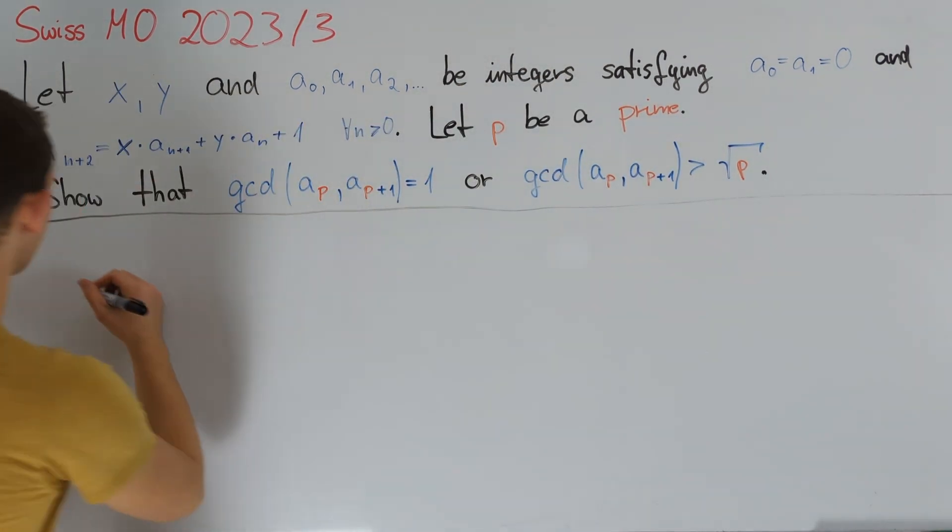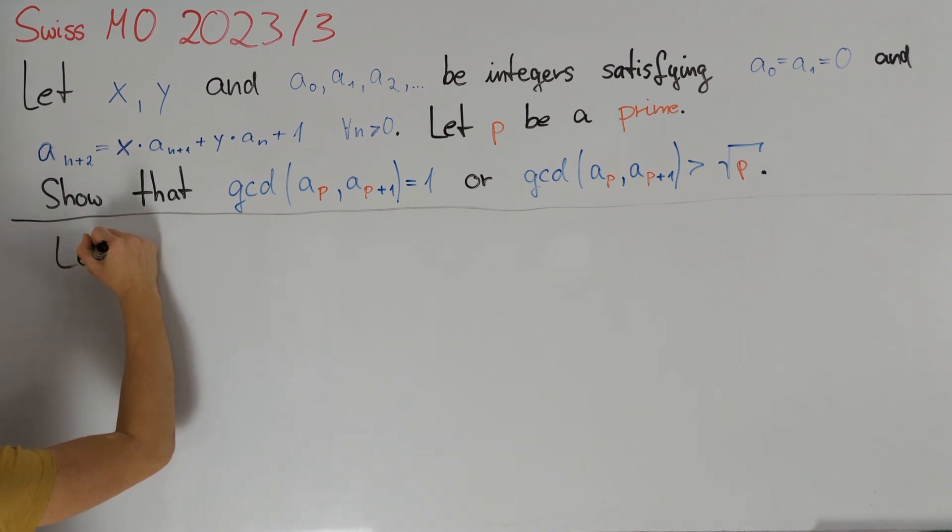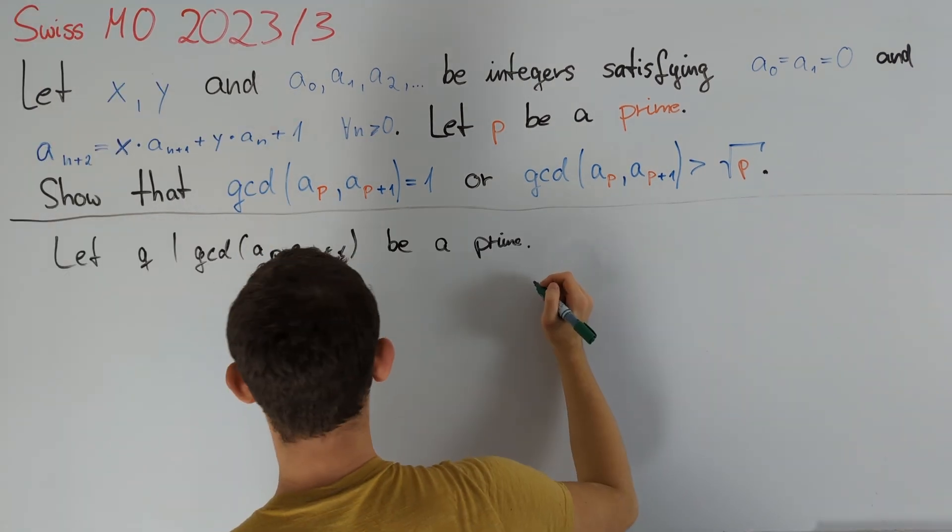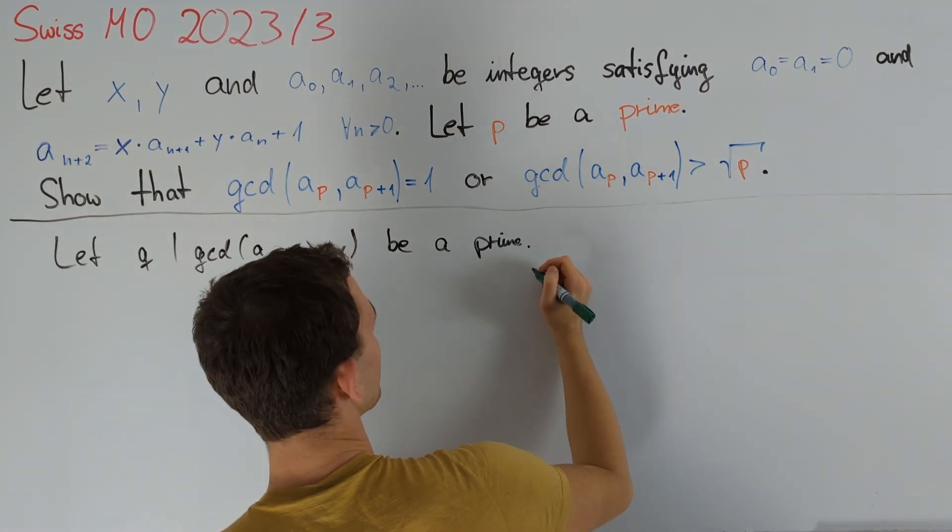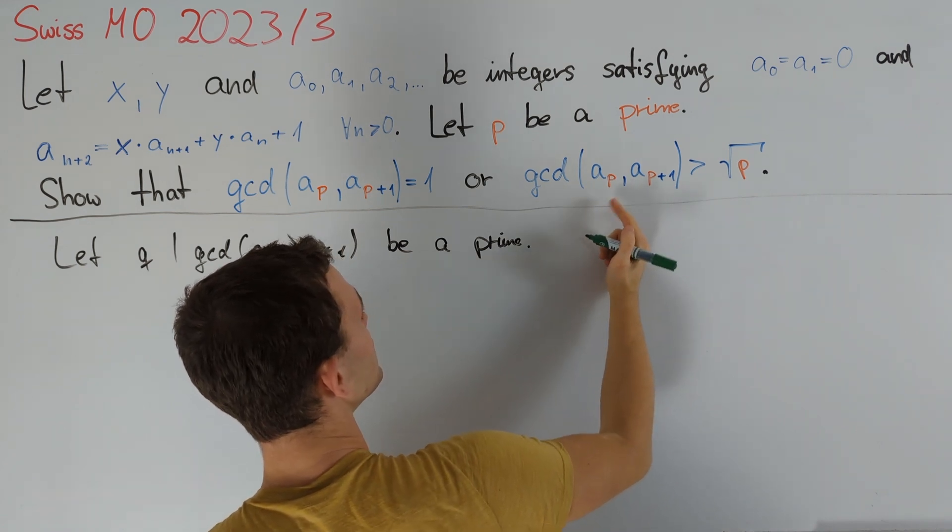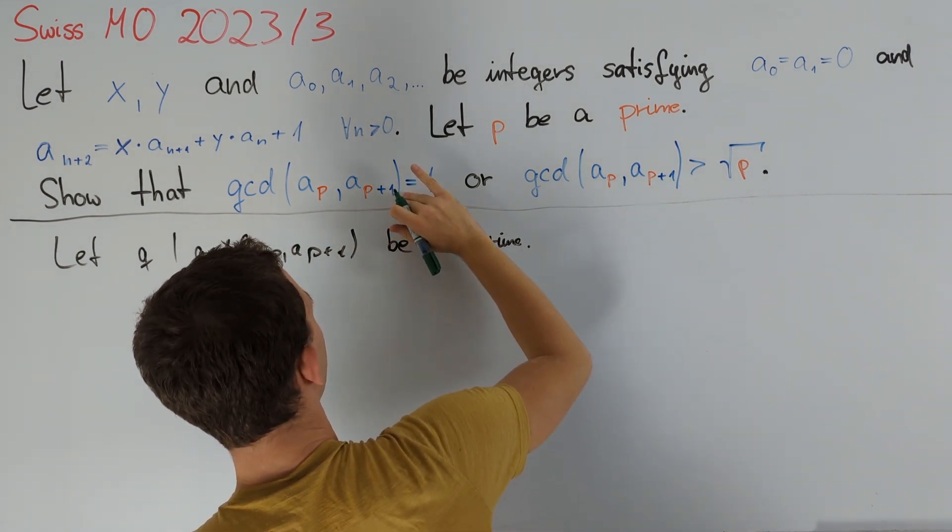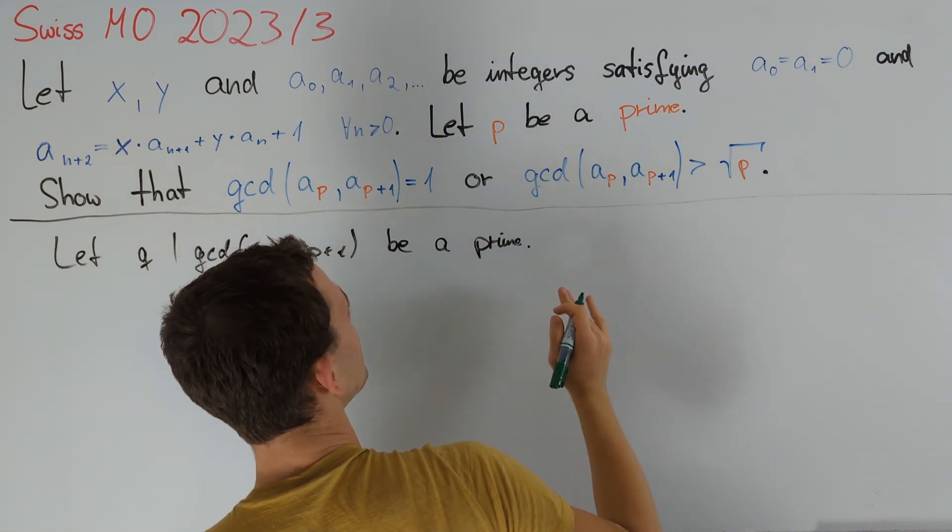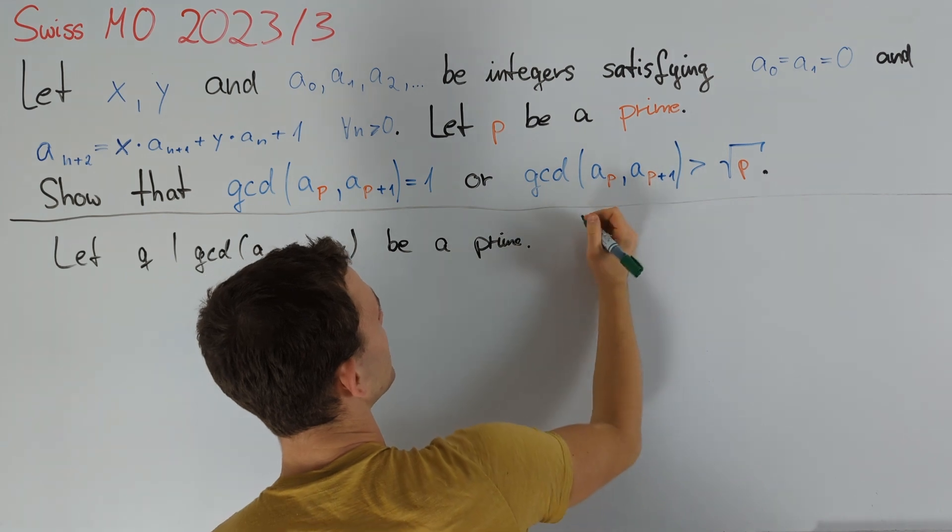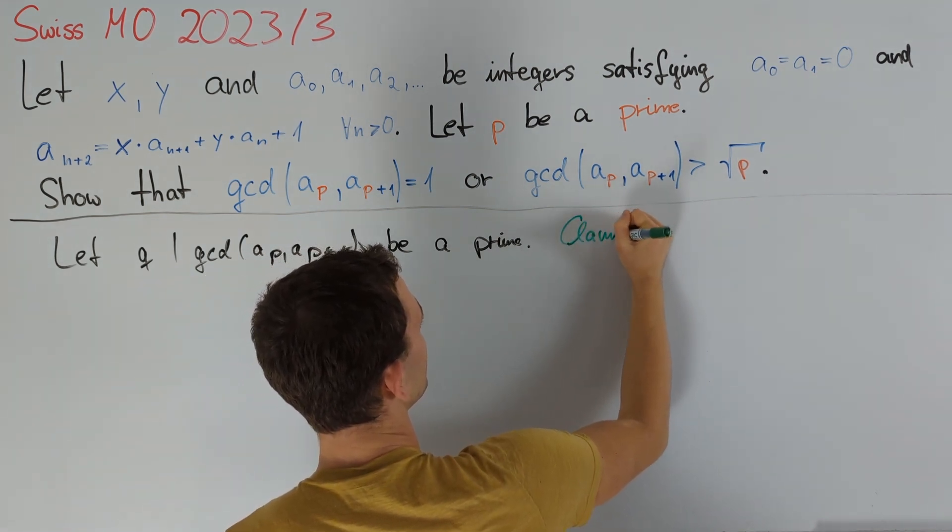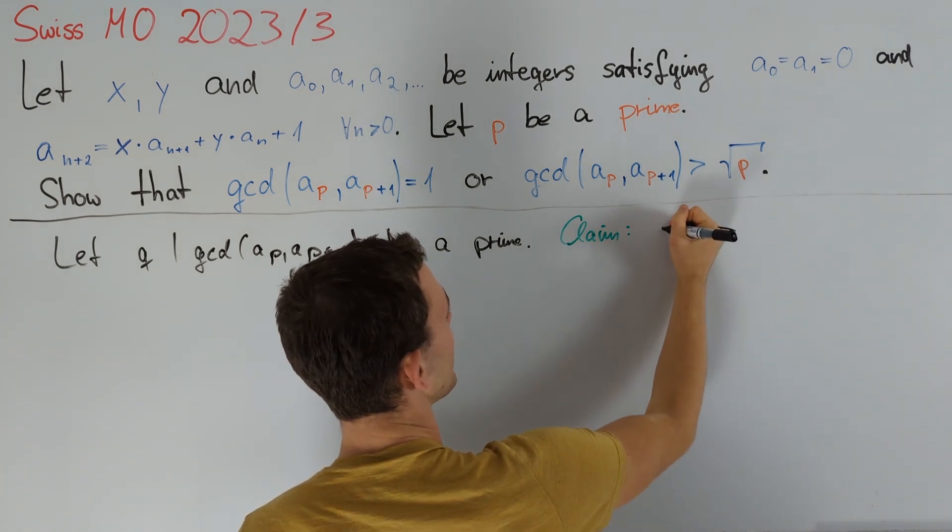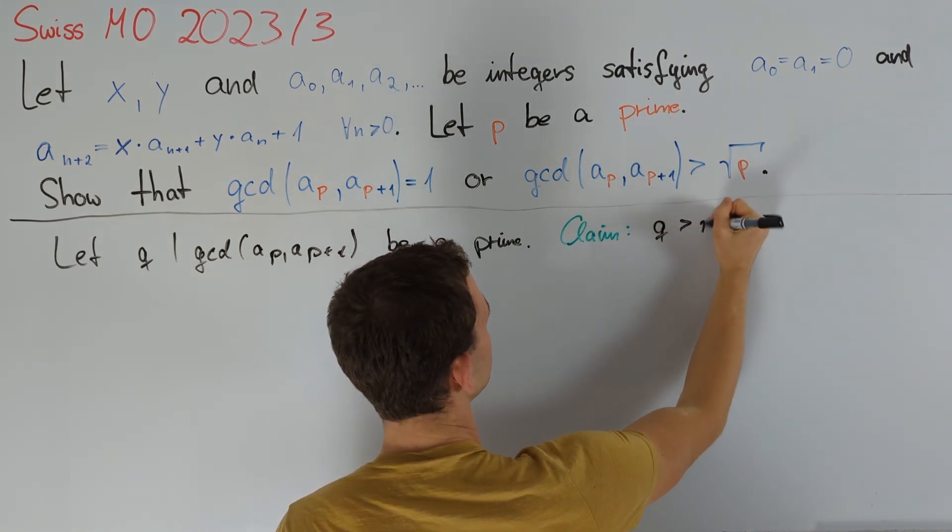The idea for solving this problem is to consider any prime q dividing the gcd of aₚ and aₚ₊₁ and if we can prove that q must be larger than the square root of p then the conclusion immediately follows because if this is not equal to 1 then we can find such a prime divisor and then it immediately follows that our gcd will be larger than the square root p and so we write down our claim which we will prove in the following that q is greater than square root p.